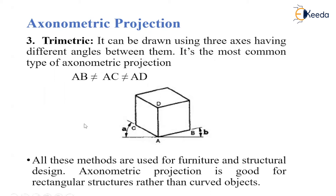Axonometric projection is good for rectangular structures rather than curved objects. That is why it is used for the creation of furniture.